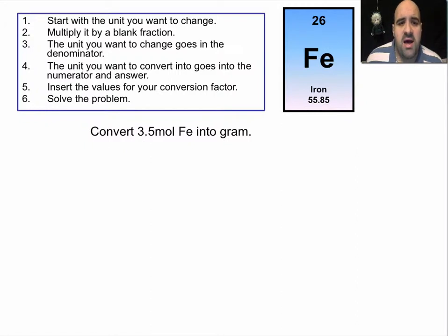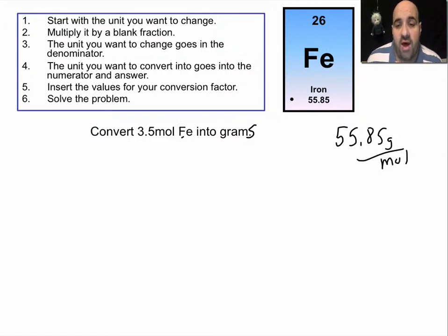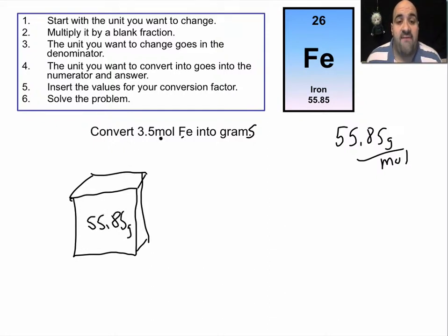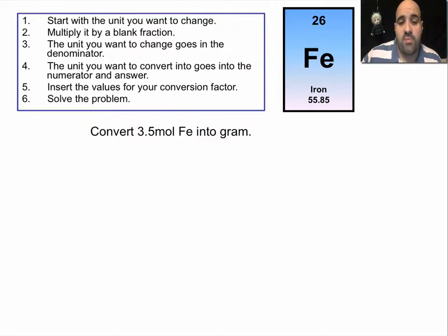So we have a question: convert 3.5 moles of iron into grams. Hopefully you remember that one mole of iron is 55.85 grams per mole. So one mole weighs 55.85 grams and you have 3.5 of them, so you multiply them. I know moles are a confusing term, but it's really like saying: if you had a box that weighed 55.85 grams, what would 3.5 boxes weigh? You're multiplying 3.5 times that number. Converting grams and moles is no different than converting inches and centimeters or miles and yards — it's the same general process, and we're going to use unit conversions.